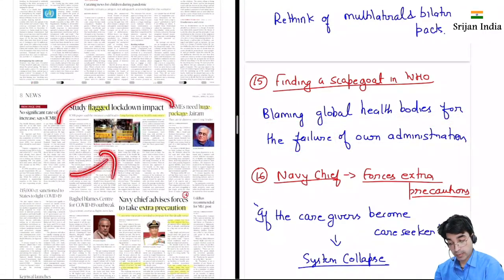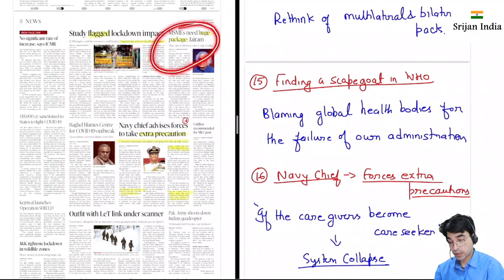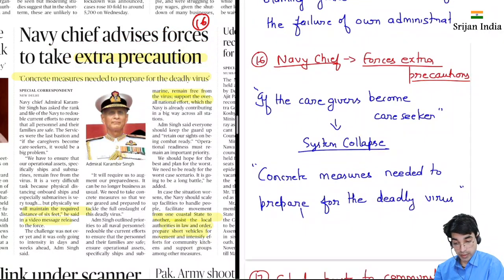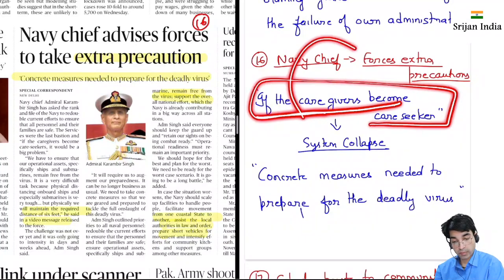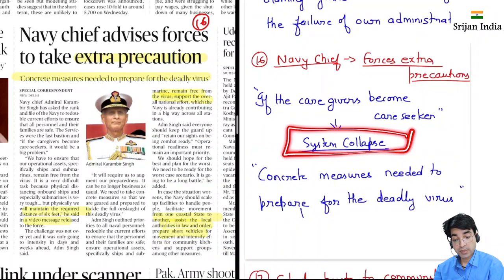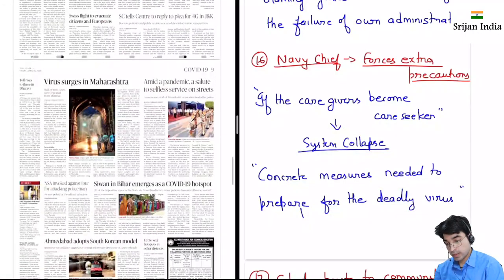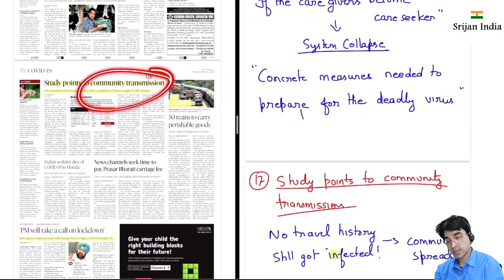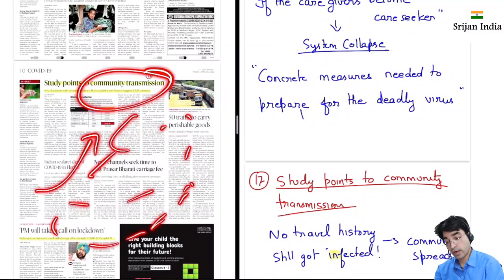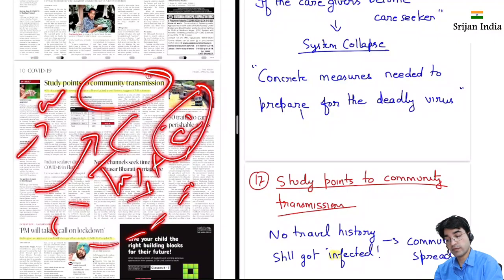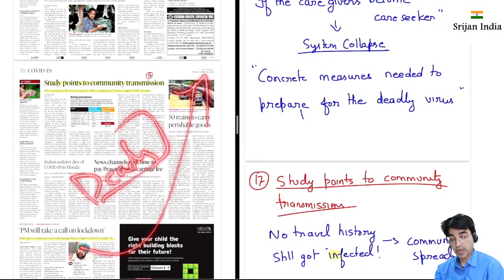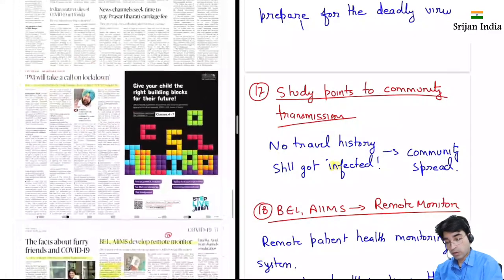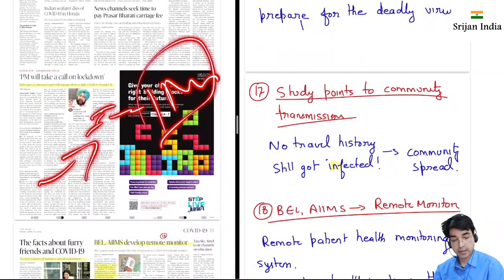Flagged lockdown impact — lockdown se problems ho rahi hain, MSME ko huge package ki zarurat hai. Admiral Karambir Singh, Navy Chief, inhone bola hai: Navy Chief advises forces to take extra precaution. Bahut achhi line hai: 'If the caregivers become care seekers' — jo logon ki madad karne ke liye bane hain, unhi ko madad ki zarurat padne lag jaaye, so that is why system collapse nahi hona chahiye. Concrete measures needed to prepare for the deadly virus. Community transmission ka simply yeh meaning hai ki community mein aisa virus transfer ho raha hai ki logon ka koi travel history nahi hai, kisi ke infection known contact mein nahi aaya aur phir bhi yeh infection pakad li — yeh stage bahut deadly hoti hai, cases bahut teezi se spike hote hain.